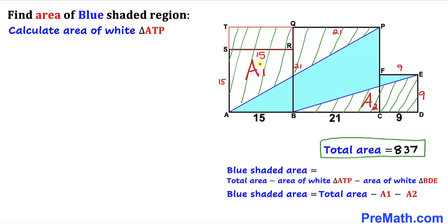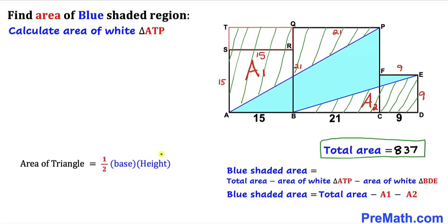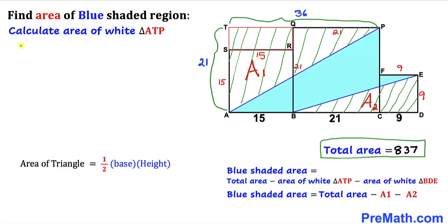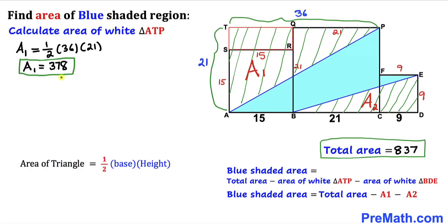Let's calculate the area of white triangle ATP. Using the area formula — one half times base times height — the base is 15 plus 21, giving 36 units, and the height is 21 units. Therefore A₁ = one half times 36 times 21, which turns out to be 378.